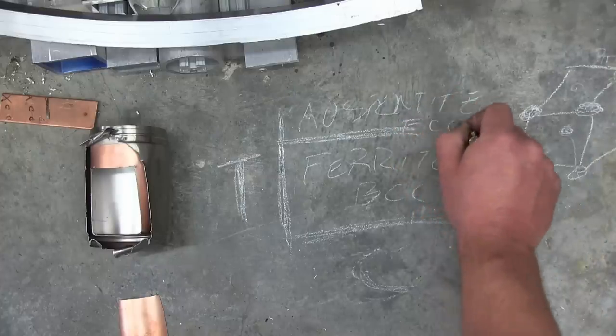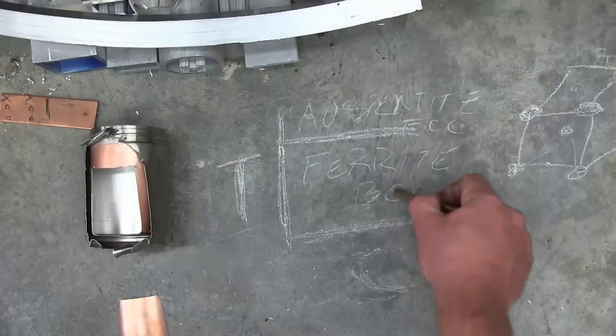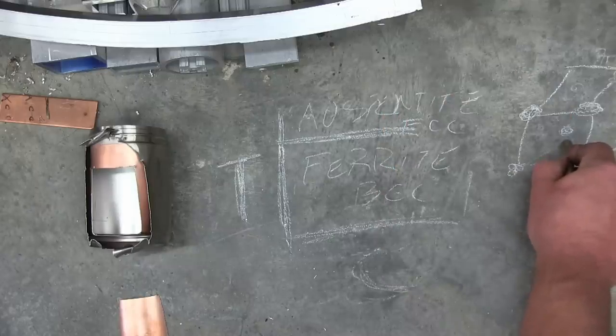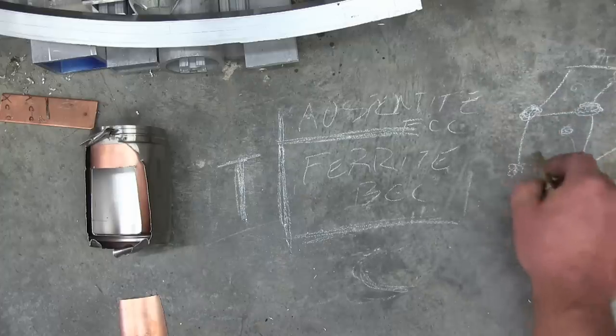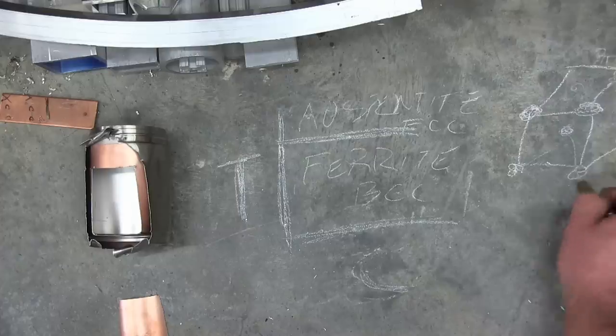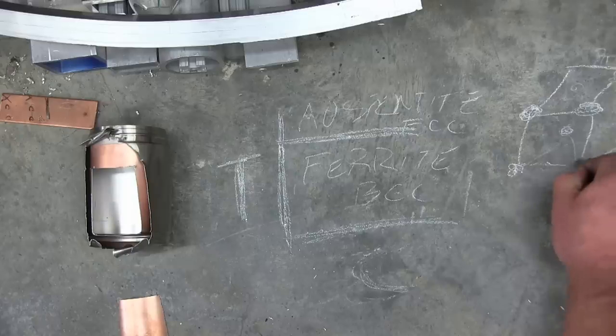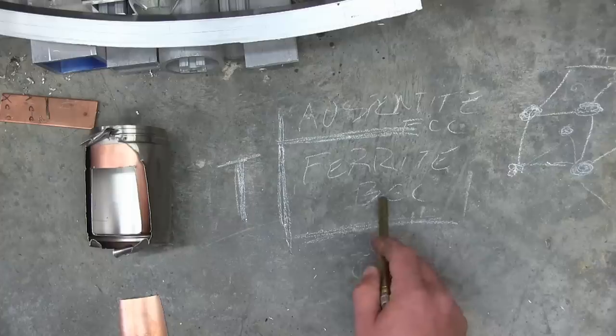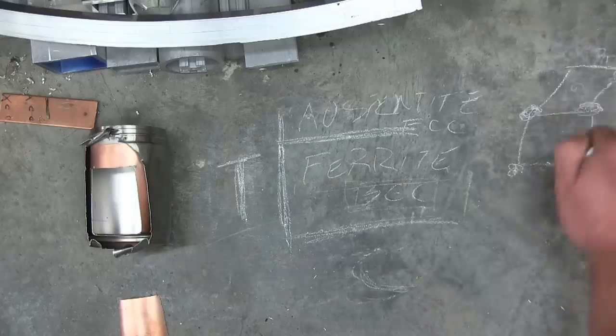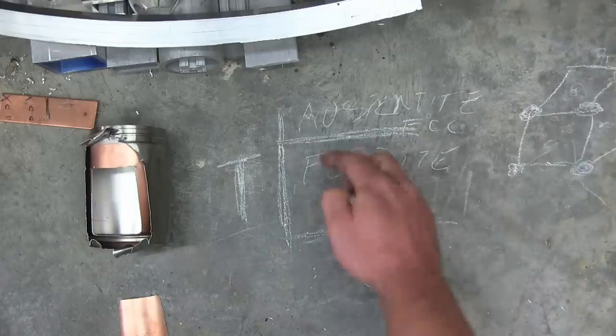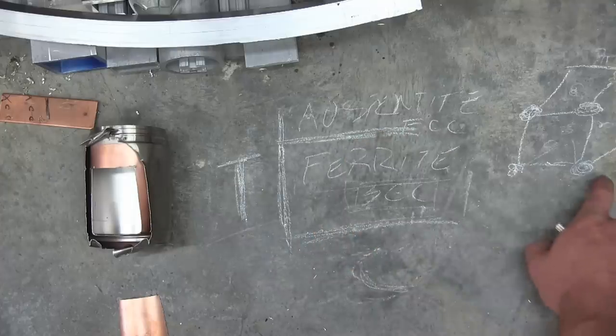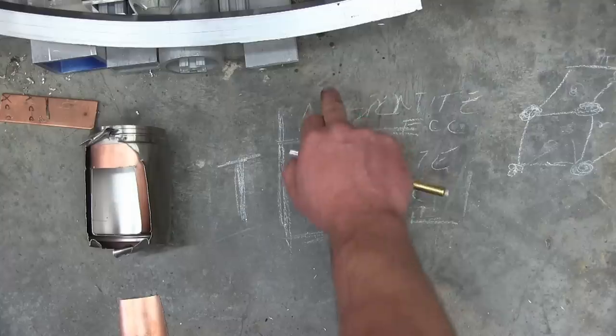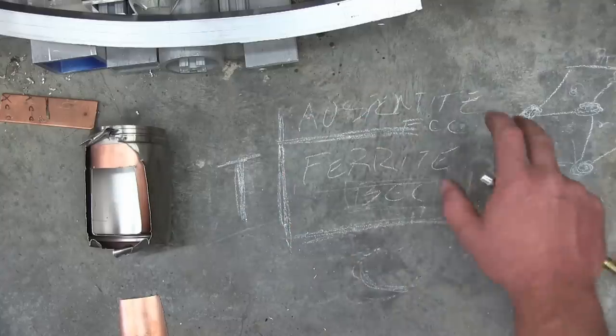As it cools down, it changes its structure to body-centered cubic. So, we get rid of the ones in every face, and we have one smack dab in the middle of the cube. The FCC, austenite, is non-magnetic. The ferrite is magnetic. So, what is happening is, when we alloy this with nickel and chromium, that displaces one of these iron atoms in the matrix. So, instead, we have chromium. Now, as we come down in temperature, it doesn't change to ferrite. It doesn't change to this crystal structure. It stays in this face-centered cubic, which is non-magnetic. So, by alloying it with nickel and chromium, we maintain this austenite structure, and it is non-magnetic.